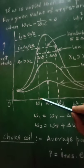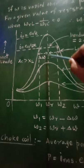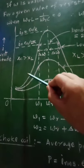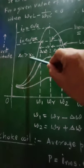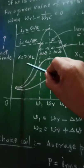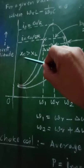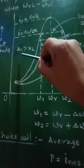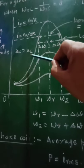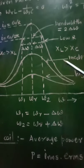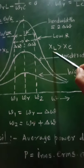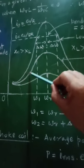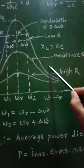As the value of resistance in the series LCR circuit decreases, the sharpness of the resonance curve increases. The region on the left side of ωᵣ is dominated by capacitive reactance, meaning XC is greater than XL. On the right side of ωᵣ, the region is dominated by inductive reactance, meaning XL is greater than XC.